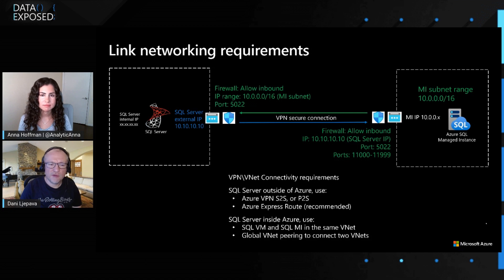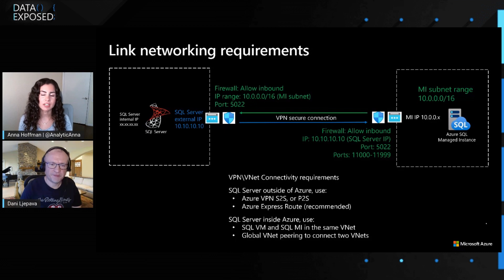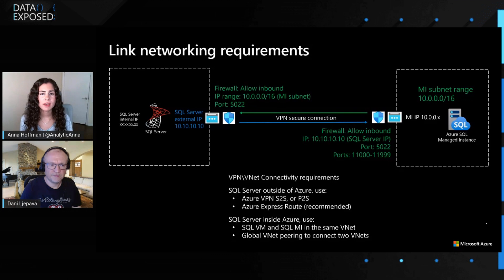On the other hand, you could also use SQL Server 2016 in a VM in Azure. If you're using that, you just need to use global VNet peering to connect the two VNets, or deploy the VM in the same VNet as Managed Instance. That makes sense. And you mentioned this can be great for a read-only or almost like a disaster recovery situation — what if I wanted to migrate? Can I just migrate over?